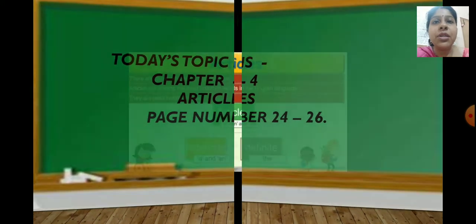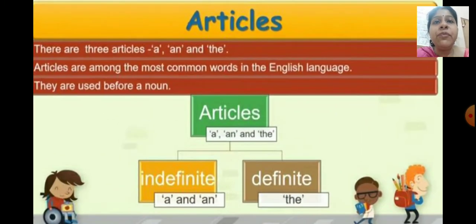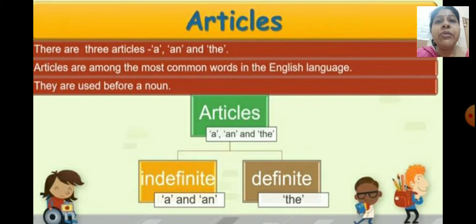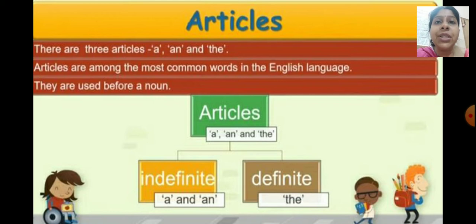Get ready with your books. Before we move into the exercises of articles, first let me quickly recapitulate the concept — what are articles? Articles are mainly the words which are used before a noun and it is a very common word in the English language. There are three types of articles: a, an, and the.